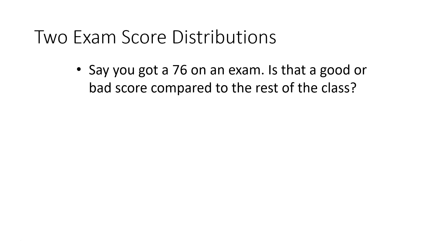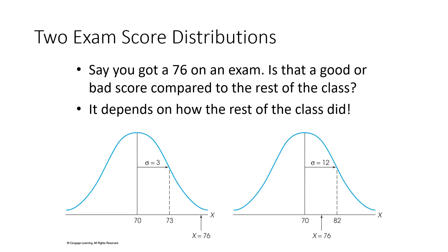Let's say you got a 76 on an exam. Is that a good or bad score compared to the rest of the class? Really, it depends on how the rest of the class did. If the mean of the test scores was 70 and the standard deviation was 3, that would mean you did two standard deviations above the average, falling in the top 97%. If the mean were 70 and the standard deviation were 12, that would mean you fell right in the middle 70% of students — you didn't do that hot.